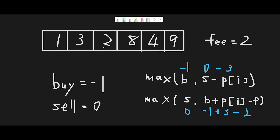On the third day (price=2): not buying keeps buy at -1, versus buying using sell profit: 0 - 2 = -2. So -1 is still the max buy profit. For sell profit: 0 versus -1 + 2 - 2 = -1. So sell profit remains 0.